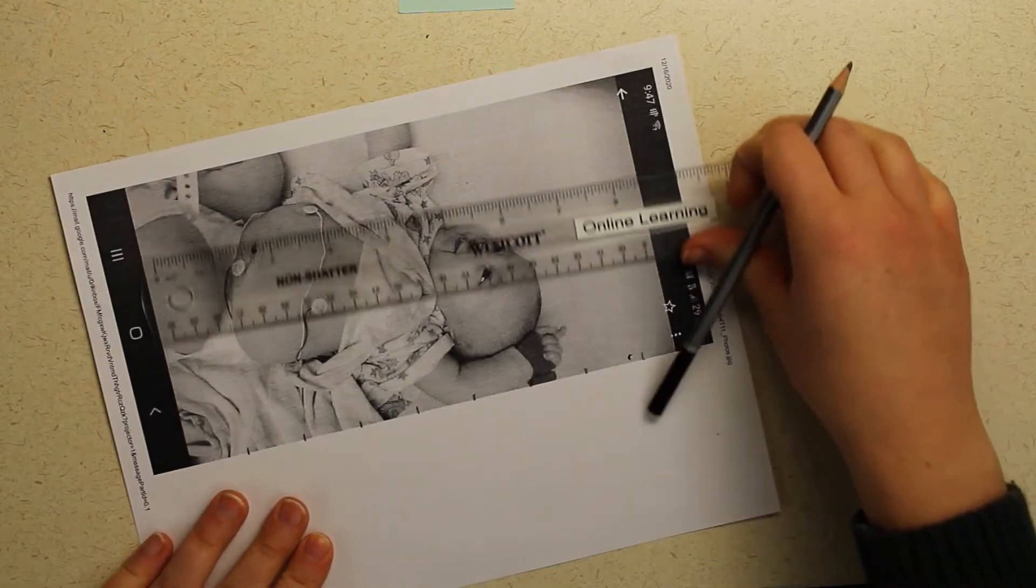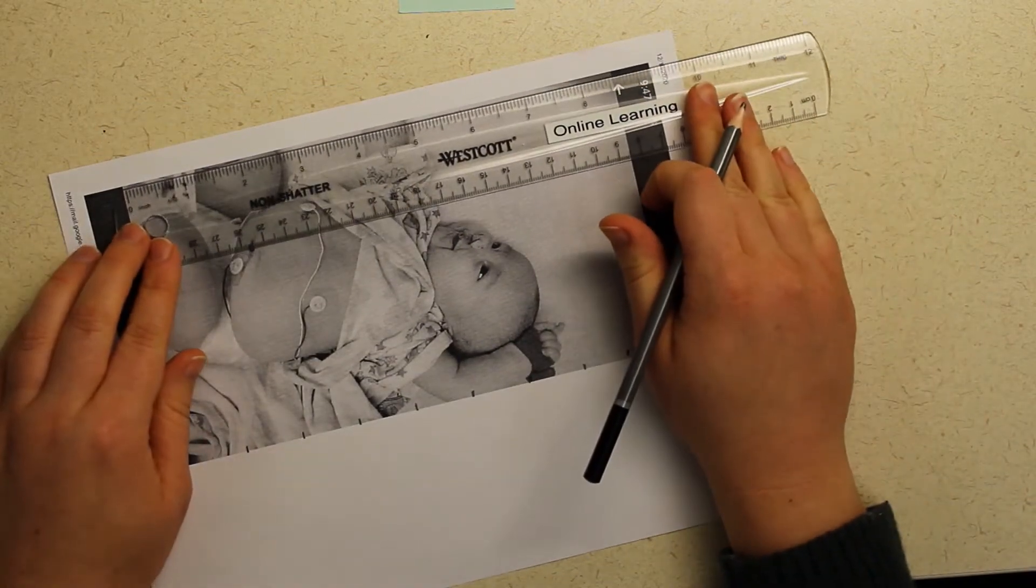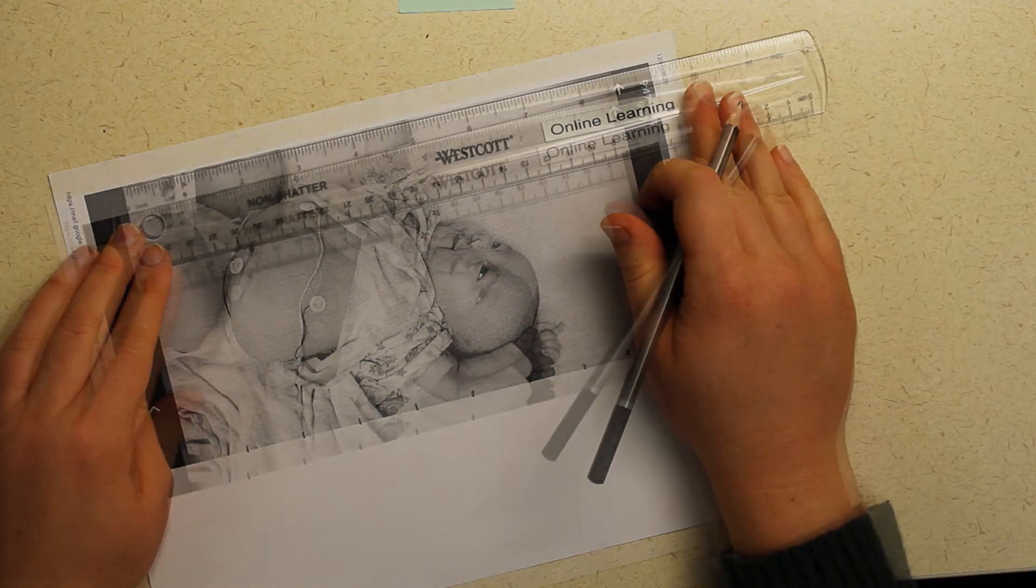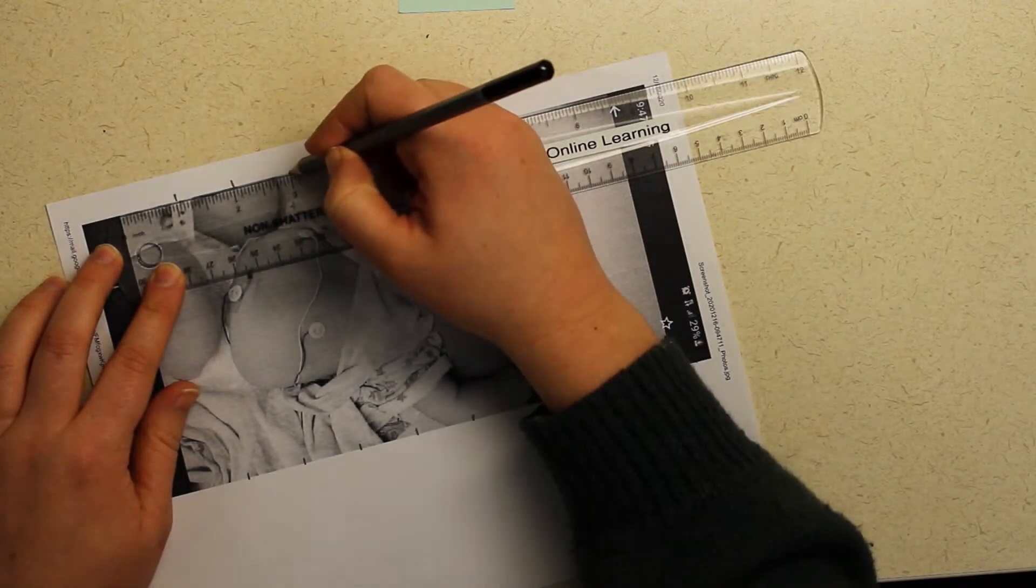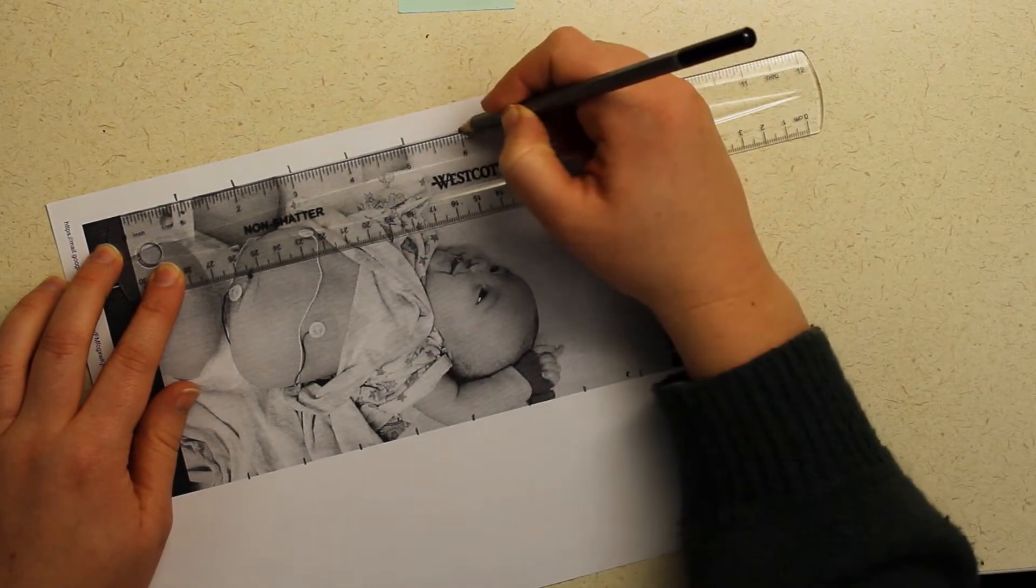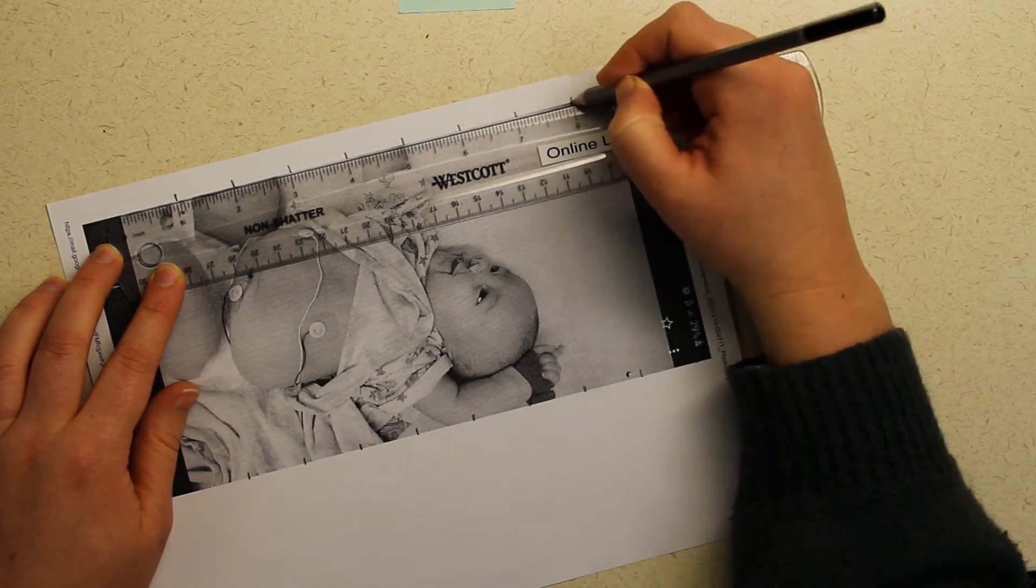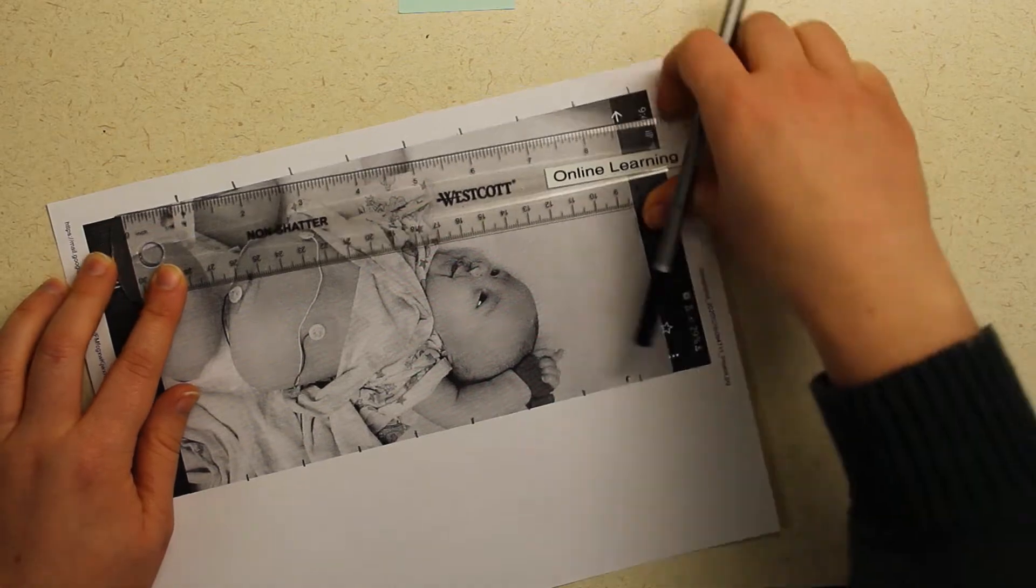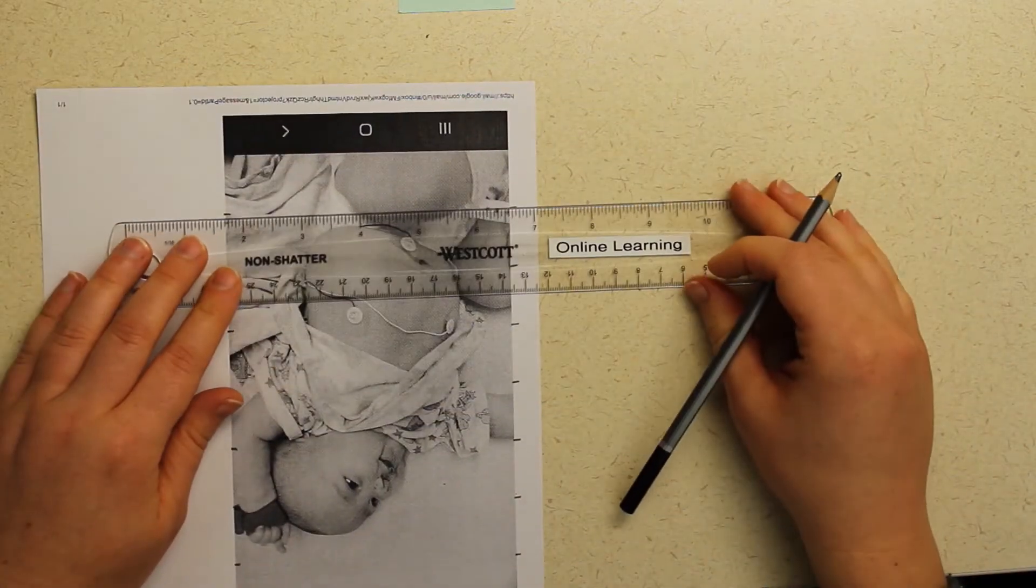If your picture is smaller you probably want to do maybe half inch boxes or something even smaller than that, but as long as they are straight and the width and height are the exact same, it works out just fine.